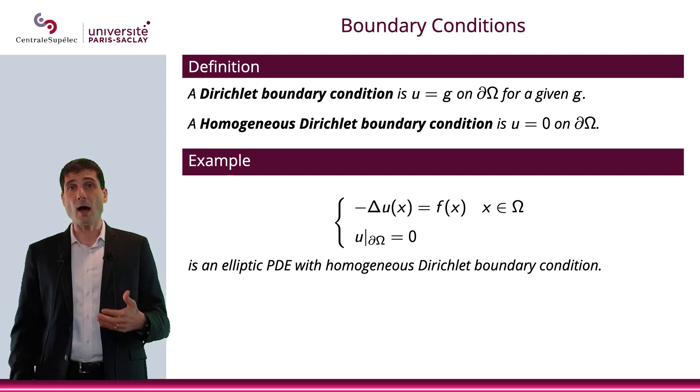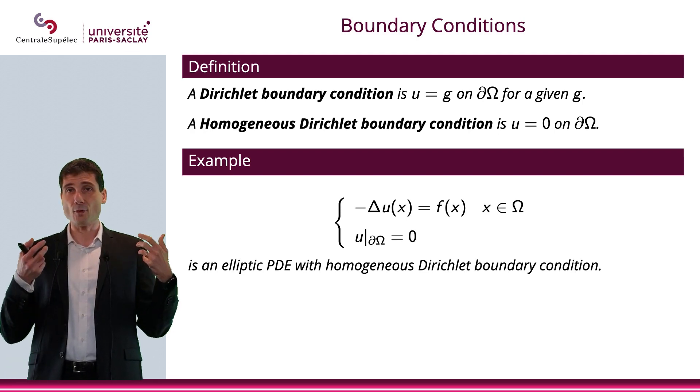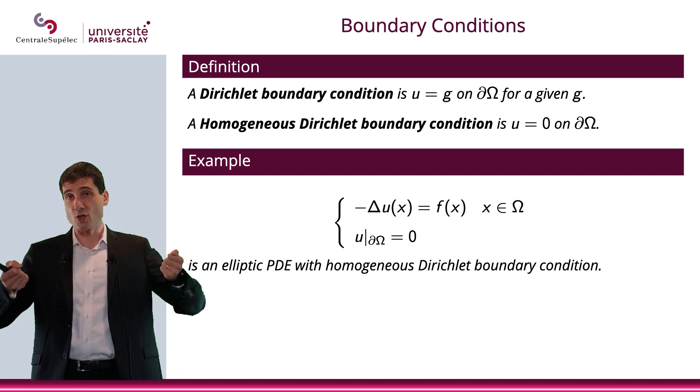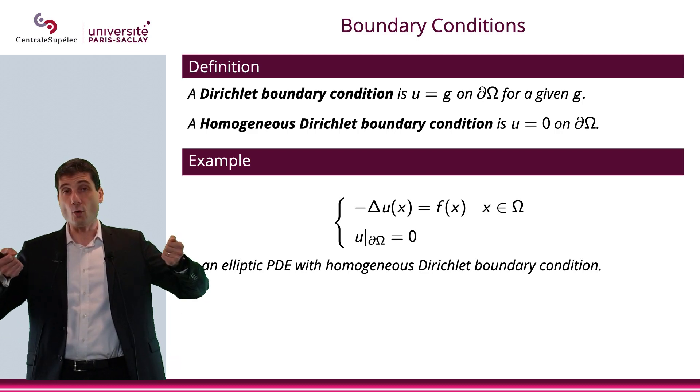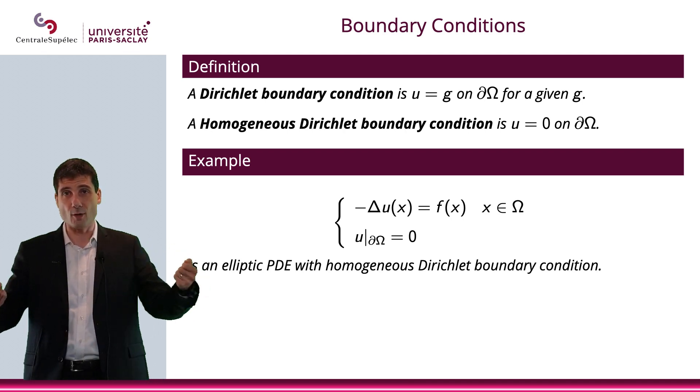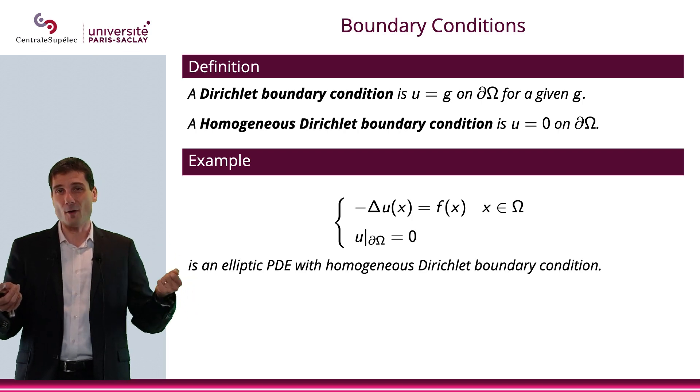It can represent many things. For instance, if you are in mechanics, then the boundary condition U equals 0, U equals G, means that you are basically attaching whatever you're modeling on the boundary.